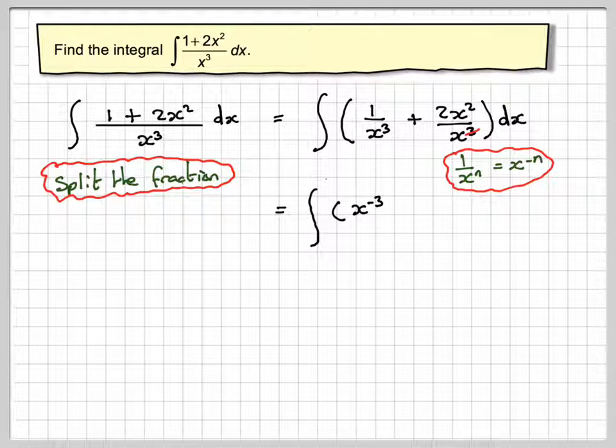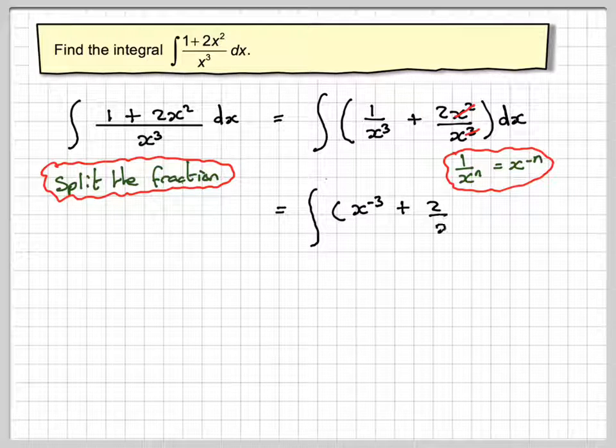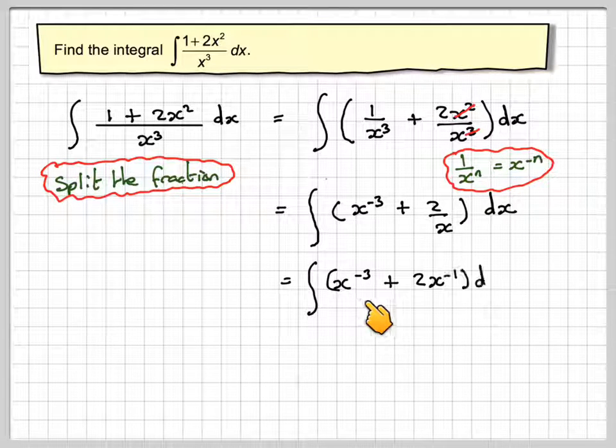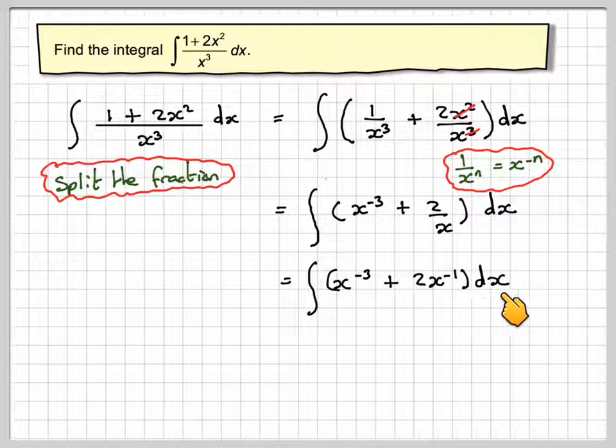And the 3 will cancel, so we'll just get x to the 1, and all of the x² will cancel. So this becomes plus 2/x dx, which is the integral of x^(-3) + 2x^(-1) dx.